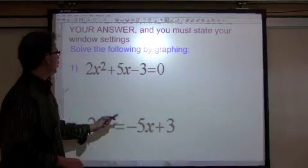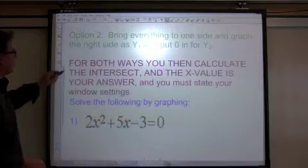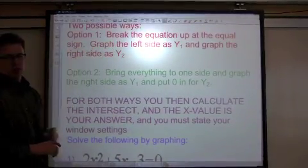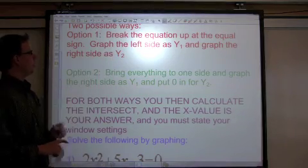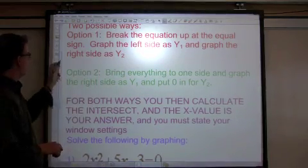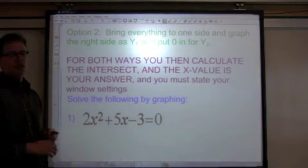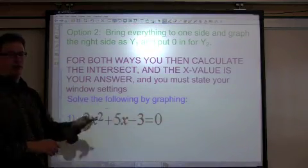Okay. So as you can see, the two steps here is you break the equation up to the equal sign. You graph the left side as y1. Graph the right side as y2. The other option is put everything in to one sign and graph zero with the other.